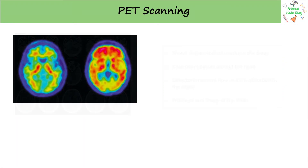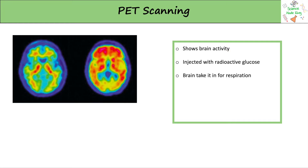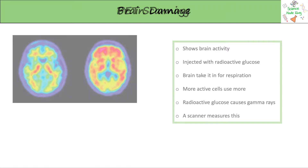PET scans are used to measure brain activity. The brain is injected with radioactive glucose, which is then taken in for respiration. More active cells take in more glucose, as they need to respire more. This radioactive glucose causes gamma rays, which are then detected by a scanner.